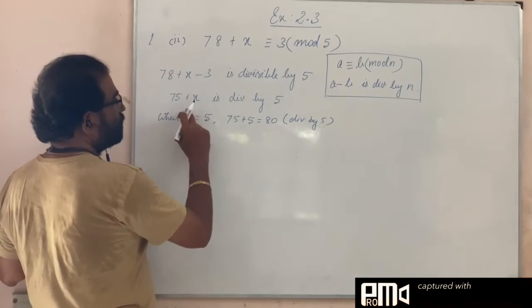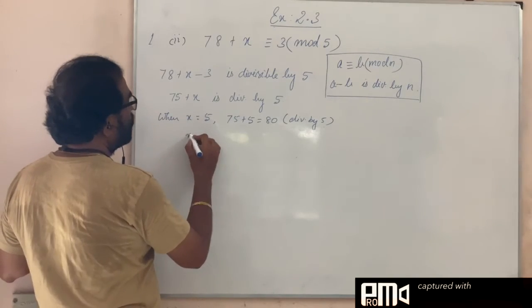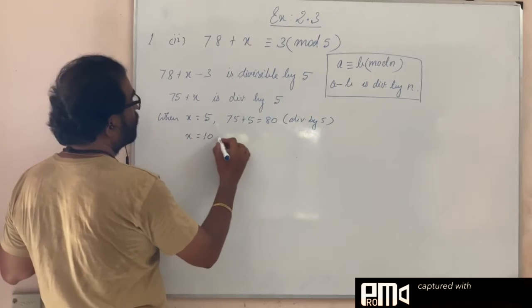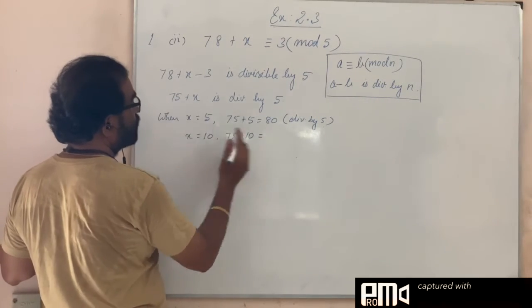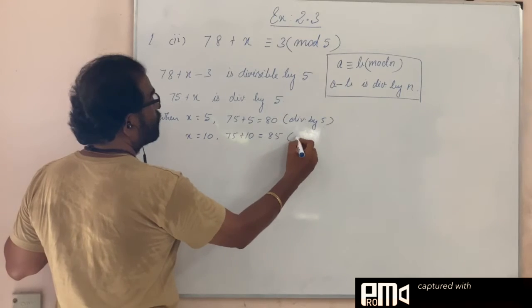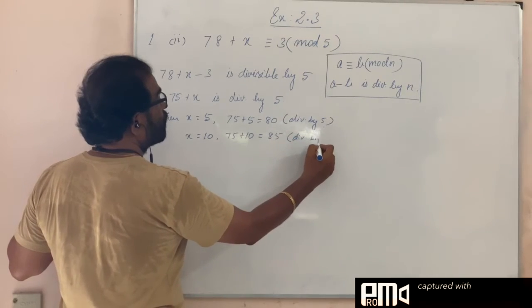Then the next number: we have to add another 5, so x = 10. Then 75 + 10 = 85, again divisible by 5.